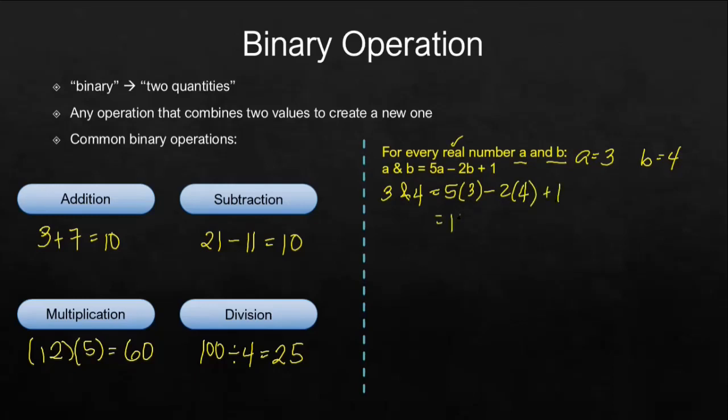5 times 3 is 15, and then 2 times 4 is 8. So minus 8 plus 1. 15 minus 8, that is 7. Plus 1, therefore that is 8. Meaning 3 ampersand 4 is 8.